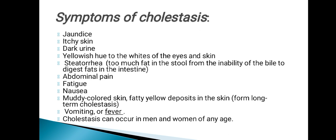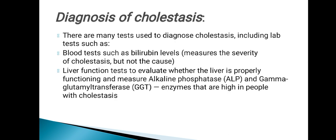Overall symptoms of cholestasis include jaundice, itchy skin, dark urine, yellowing of the whites of the eyes and skin, and steatorrhea — excess fat in the stool due to the inability of bile to digest fats in the intestine. Other symptoms include abdominal pain, fatigue, nausea, vomiting, and fever. Cholestasis can occur in men and women of any age.